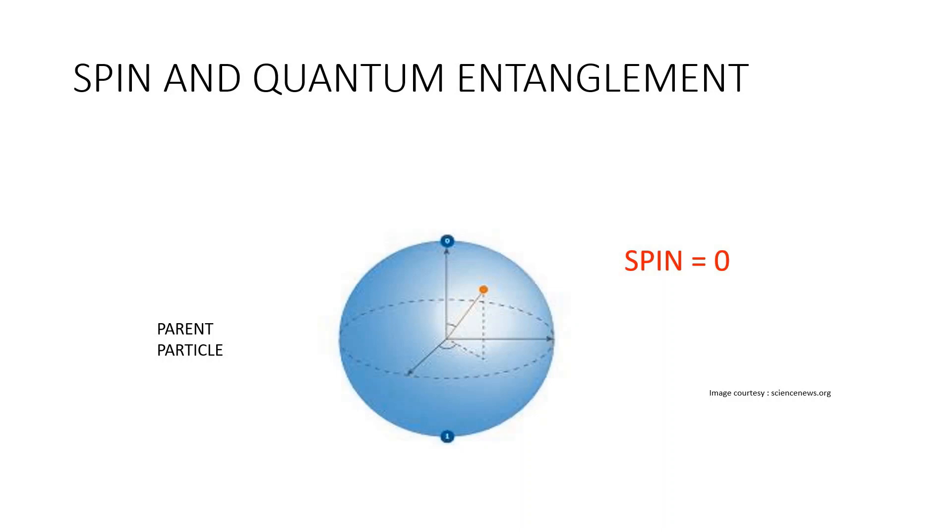In quantum mechanics and particle physics, spin is an intrinsic form of angular momentum carried by elementary particles. Spin is one of two types of angular momentum in quantum mechanics, the other being orbital angular momentum. By law of conservation of angular momentum, spin is conserved, spin is constant.